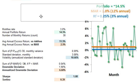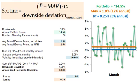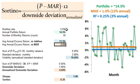The Sortino generalizes from the Sharpe. The key difference is that we've introduced the minimum acceptable return. In the numerator, it's the portfolio excess return over the minimum acceptable return, and in the denominator, instead of plain portfolio volatility, we use the downside deviation. For the numerator, our annual excess return is 14.5% minus the hurdle of 12%, which is 2.5% excess return above the hurdle.